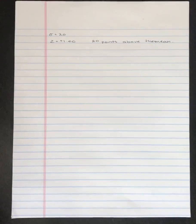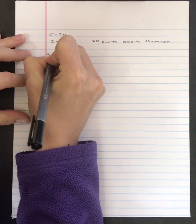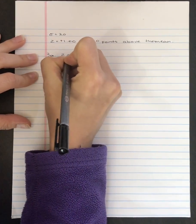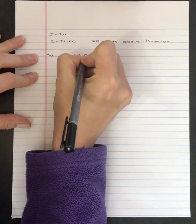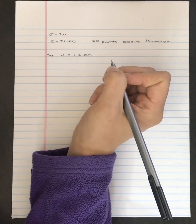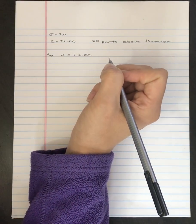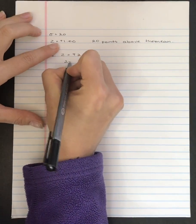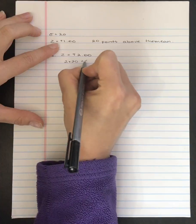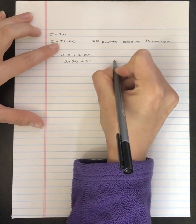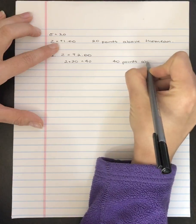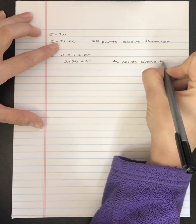So question 3a is a z-score of equal to plus 2.00. That position relative to the mean, it is 2 times 20, that's 40. This is 40 points above the mean.